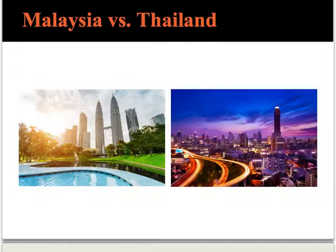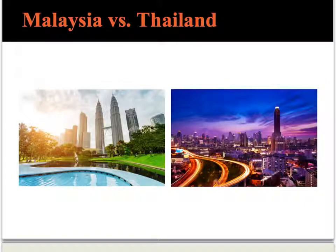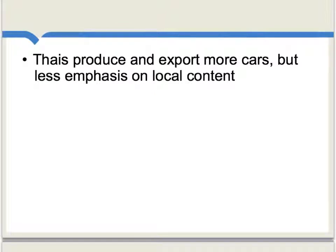Richard Baldwin draws an interesting contrast between Malaysia and Thailand. In his account, Malaysia is more intent on reproducing an entire supply chain for automobiles, and he argues this effort has largely failed. Whereas in Thailand, they are more content just to capture particular aspects of the production process for automobiles, and to rely more heavily on foreign content. Thailand has been more open to being simply a part of a broader international supply chain, and the result has been that Thailand produces and exports more cars — though there is less emphasis on local content, and thus this industrialization process is less far-reaching.